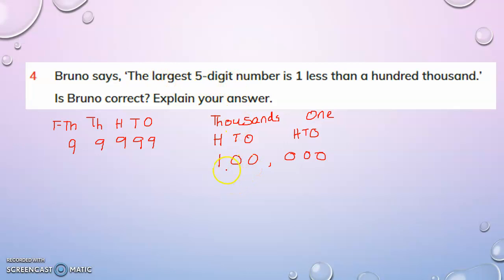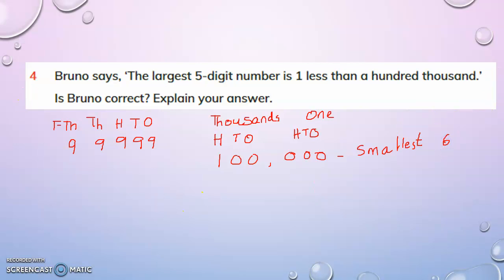We just have to check whether the number Bruno said is the smallest six-digit number. We know the smallest six-digit number is obtained by putting one in the hundred-thousands place and all the other digits being zero. So Bruno's number is one hundred thousand, which is the smallest six-digit number. If we subtract one from it, we get the largest five-digit number. So what Bruno said is correct.